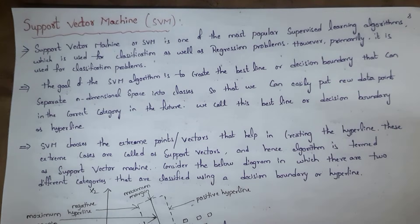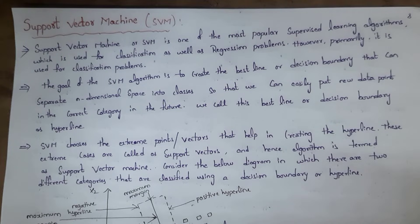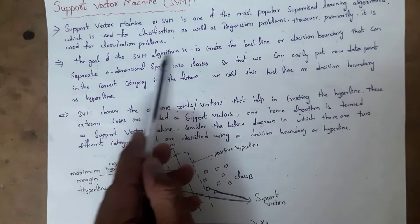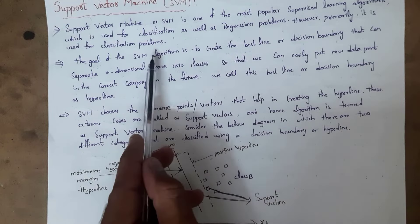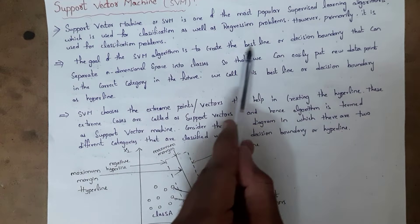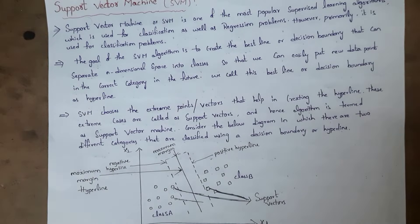By using SVM we can solve both classification problems as well as regression problems, but mainly SVM is used to solve classification problems. The main goal of the SVM algorithm is to create the best line. This SVM algorithm will create one best line, which is known as a hyperplane.